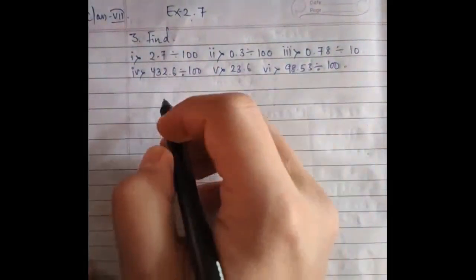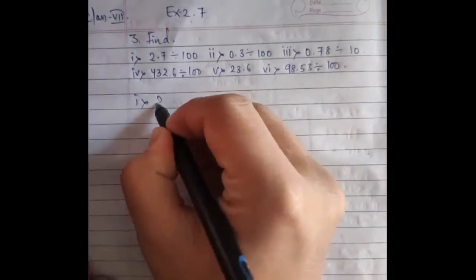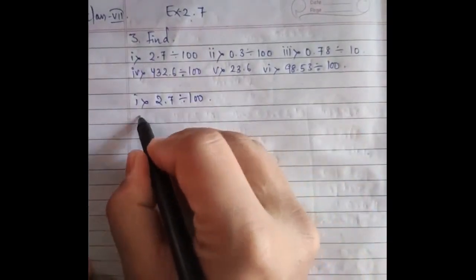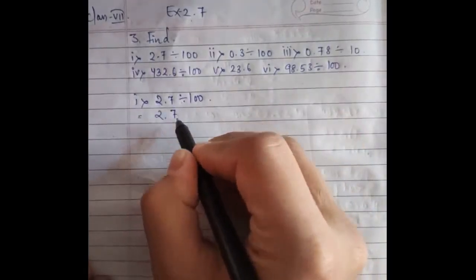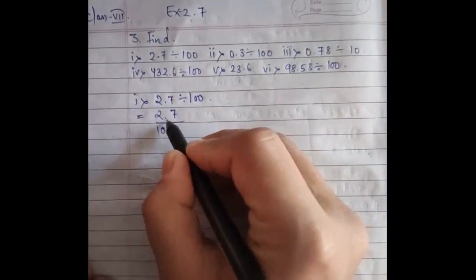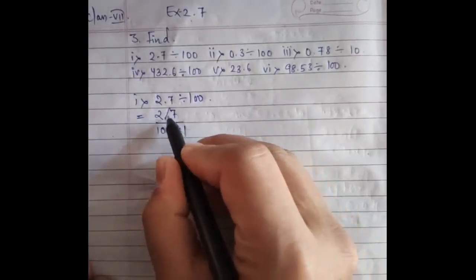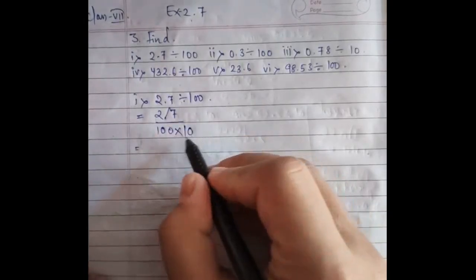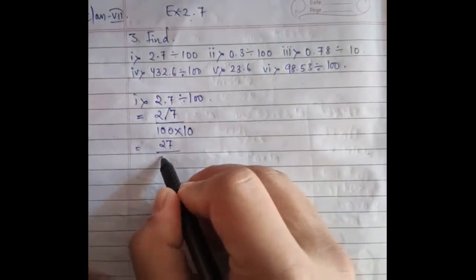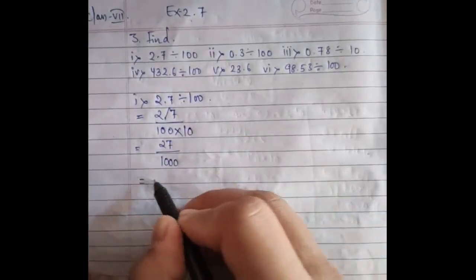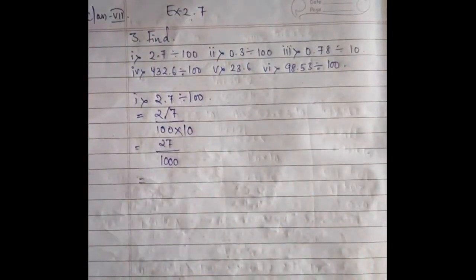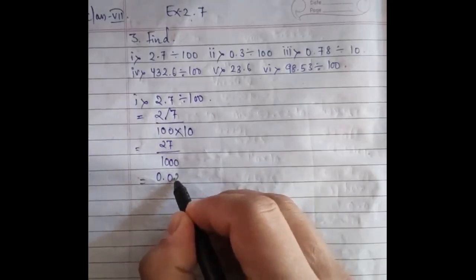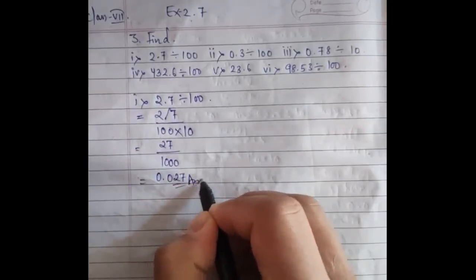The first question is 2.7 divided by 100. To solve this, remove the decimal point — there is one digit after the point, so multiply the denominator by 10, giving 27 divided by 1000. Directly you can write the answer as 0.027.